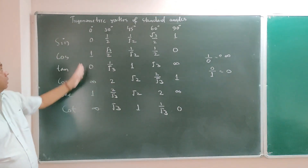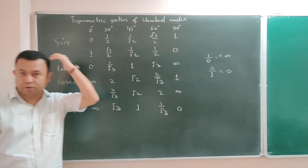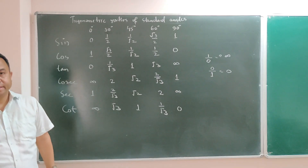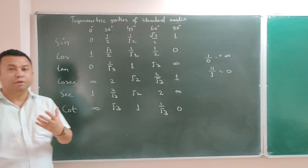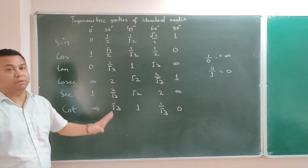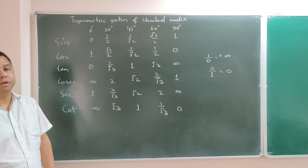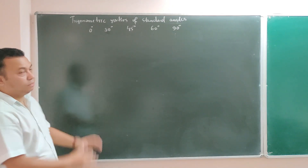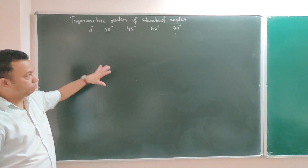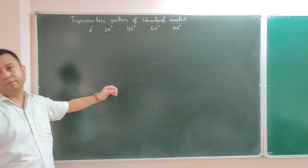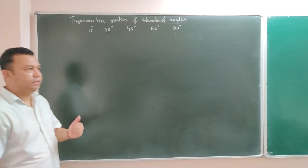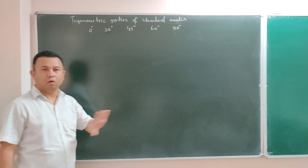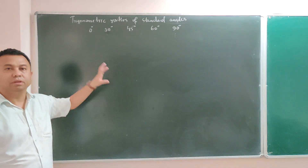So all 30 values will be there in your head. If you can memorize, it is very good. But in case you cannot, I will give you the trick to remember this table and how to create it. You can write this table on your answer script in the exam and pick the values. This chapter is very easy, but only if you know the table, because all questions are based on the table.